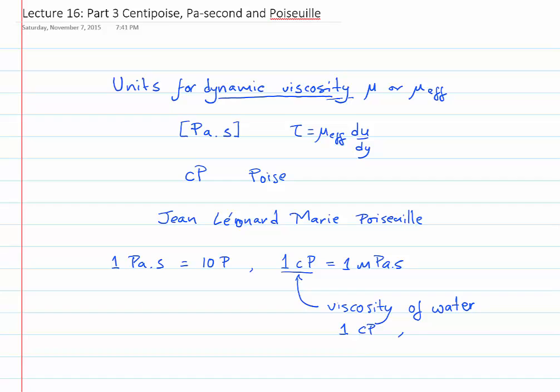More precisely, it's approximately 0.899 centipoise — or about 0.9 centipoise — at 25 degrees Celsius and room pressure conditions.